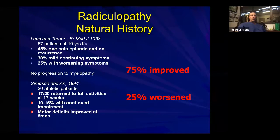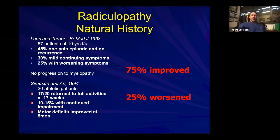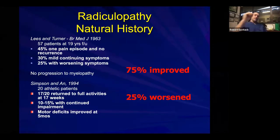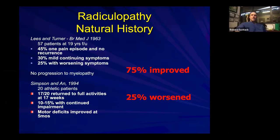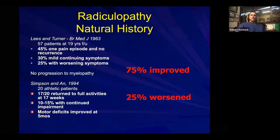Looking at older papers on cervical radiculopathy, about 75 percent overall improved and 25 percent worsened. When you see these patients in clinic, it's important to help guide them with that prognosis, because most will be quite pessimistic given their level of pain. It's nice to comfort them that most of the time these things do improve. Notwithstanding that, you still have to be vigilant about neurologic deficits and progression.